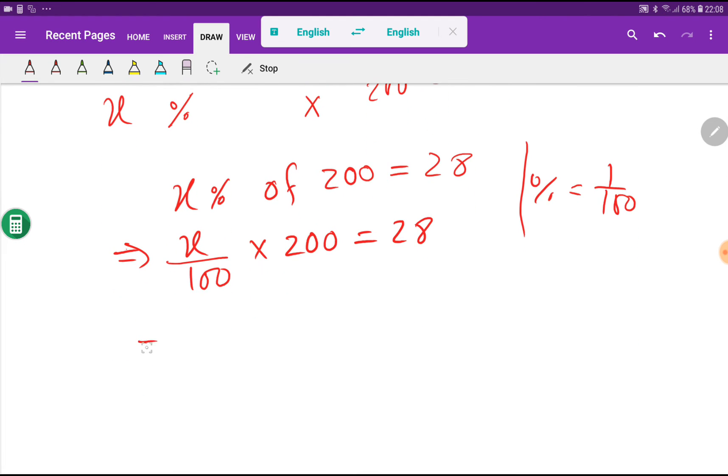So now we can write 200x equal to 28. This 100 will come here, times 100. So our target is to find out the value of x. So 28 times 100, this 200 will come here.